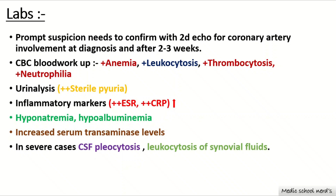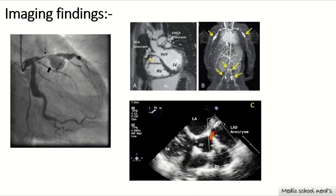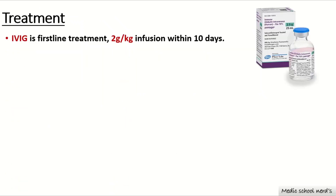MRI angiography and CT scan are rarely used. Coronary angiography can show giant coronary aneurysms, and other arteries such as axillary, femoral, and iliac arteries may also be involved. The left anterior descending coronary artery aneurysm can also be visualized.